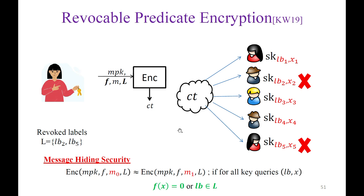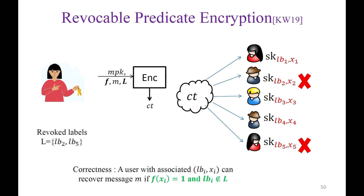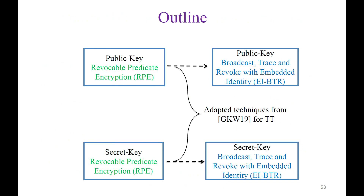RPE satisfies two security properties. Message-hiding security: encryption of two different messages with the same function and revoke list are indistinguishable if no decrypting key query satisfies f(x) = 1 with a non-revoked label. Function-hiding security: encryptions of two different functions with the same message and revoke list L are indistinguishable if for all key queries f₀(x) = f₁(x) or the label is in L. The membership check enables the revocation mechanism in our broadcast trace and revoke scheme, while function evaluation on the attribute enables the tracing. We adapt the techniques of Goyal et al. to include the revocation list setting.